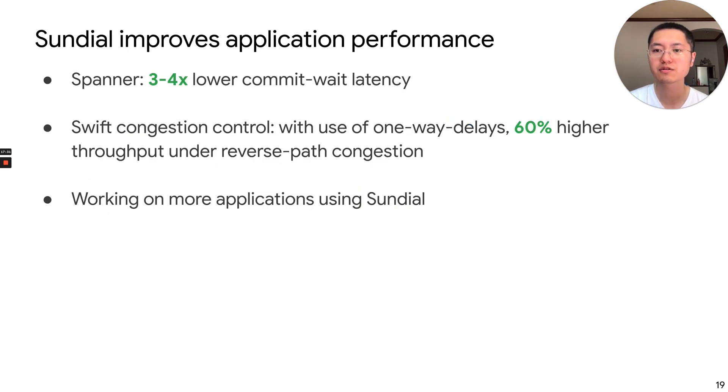We also show that Sundial can improve application performance. In Spanner, the commit-wait latency can be improved by three to four times. And in Swift congestion control, we show that it has 60% higher throughput under reverse path congestion. Beyond that, we are also working on more applications using Sundial.